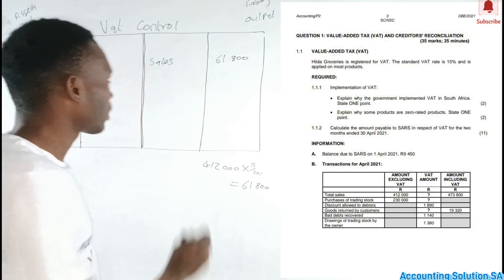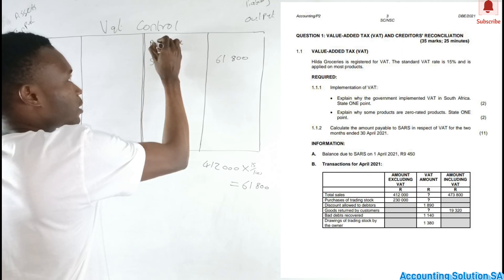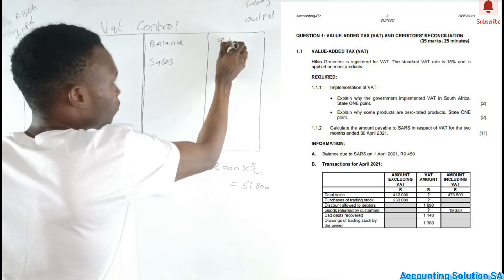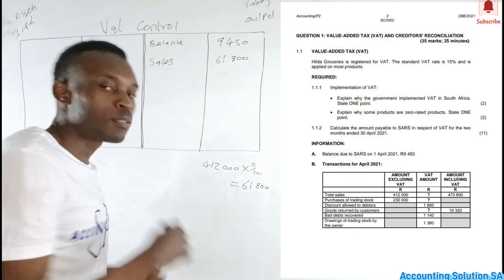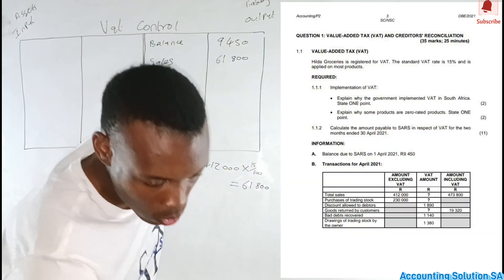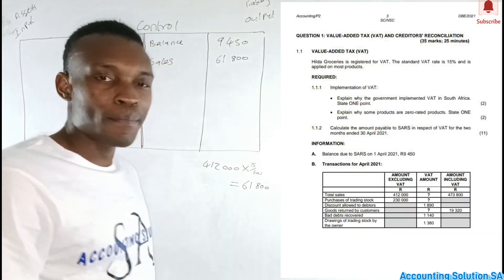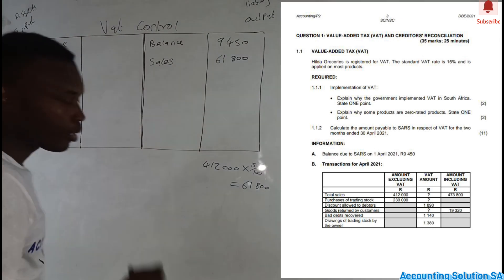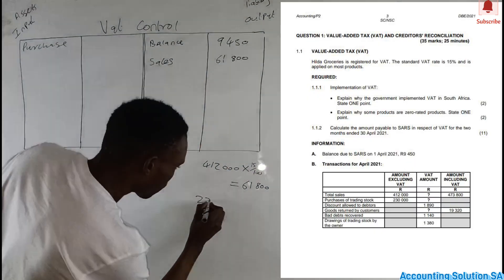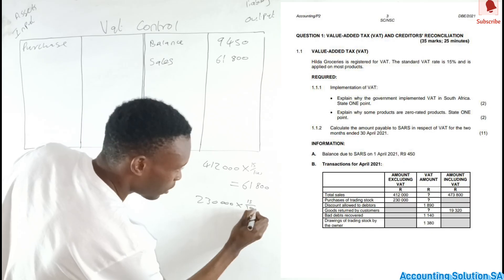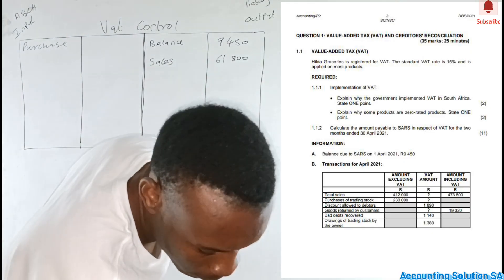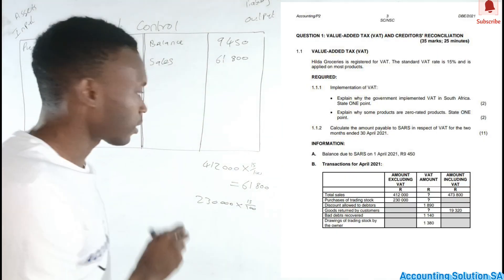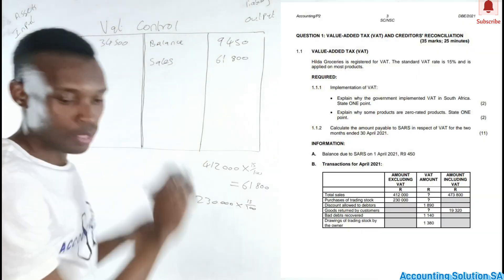Remember, our opening balance of R9,450 is also on the credit (liability) side — we owe SARS. Transaction 2: Purchase of trading stock. We purchase, which means we pay someone, so we can claim from SARS — this goes to the input (debit) side. The calculation is R280,100 × 15/100, which gives us R34,500. We record only the VAT amount of R34,500 on the input side.